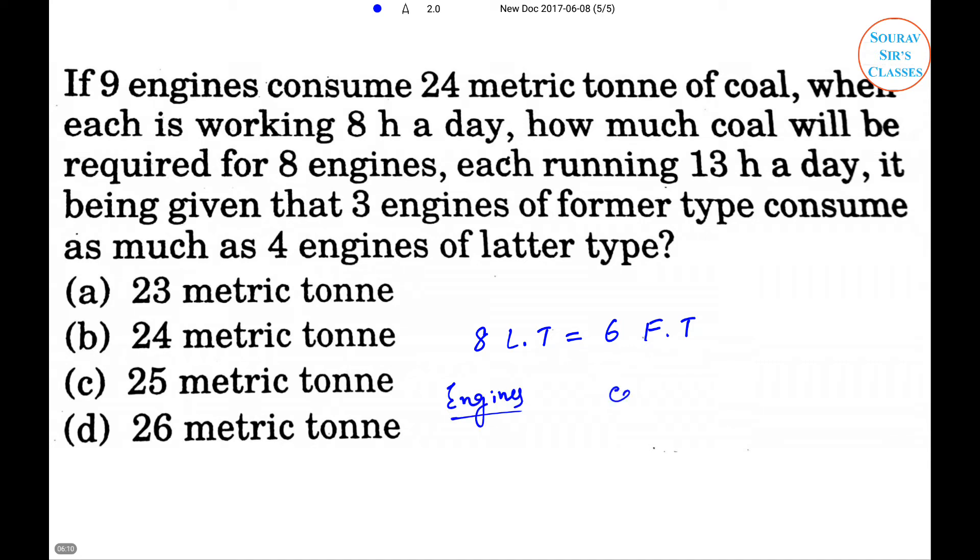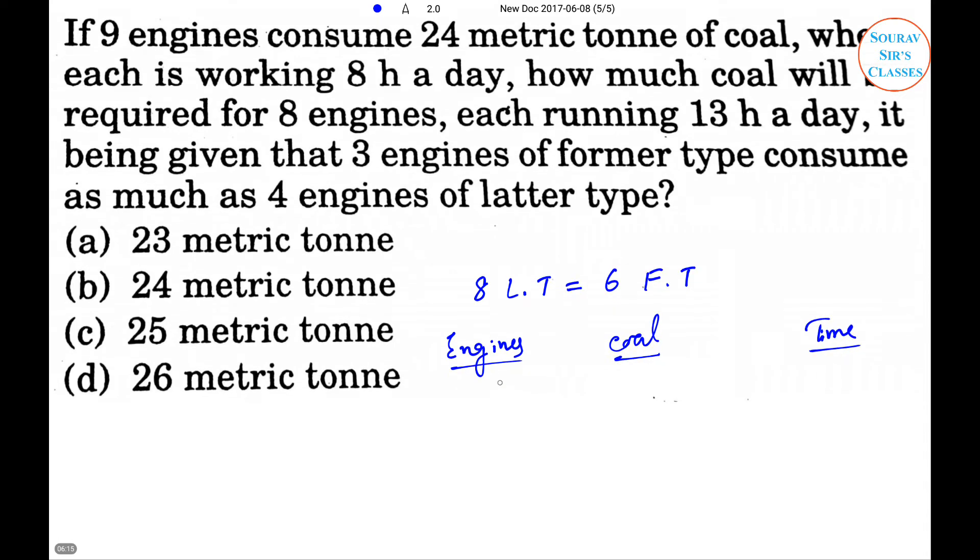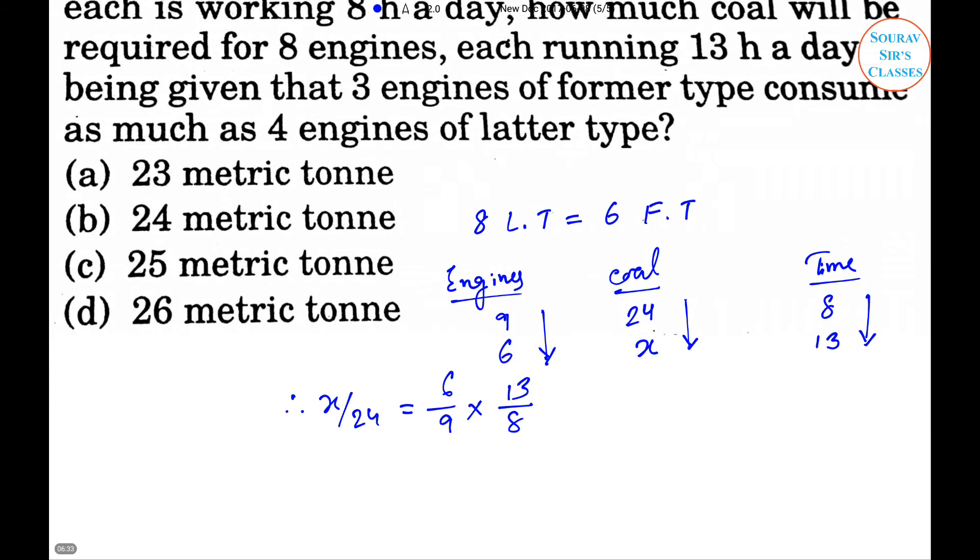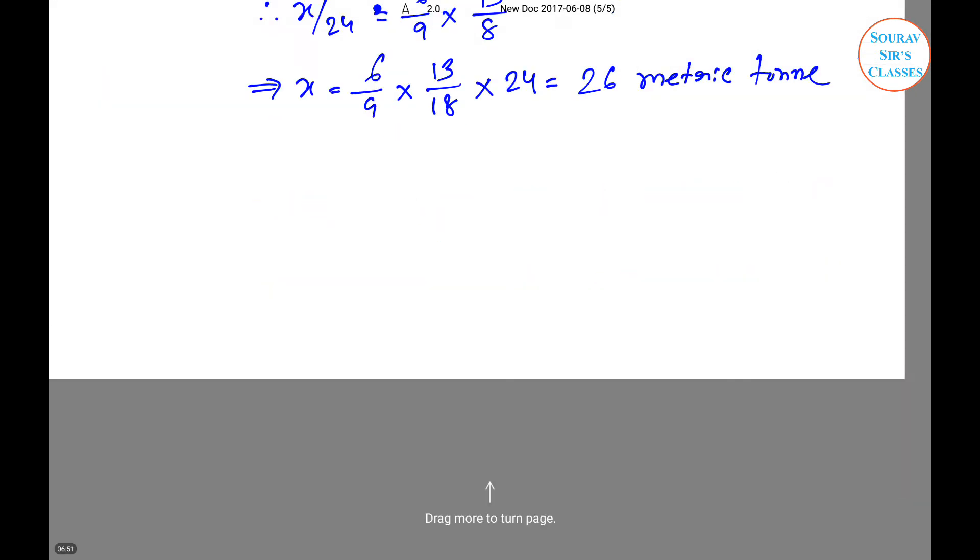Now engines, coal, and time: 9, 24, 8 and 6, x, 13. So that means x by 24 equals 6 by 9 times 13 by 8. That implies x equals 6 by 9 multiplied by 13 by 8 into 24, which equals 26 metric tonnes. So option D will be the right answer.